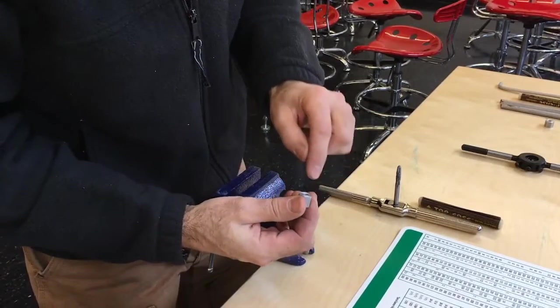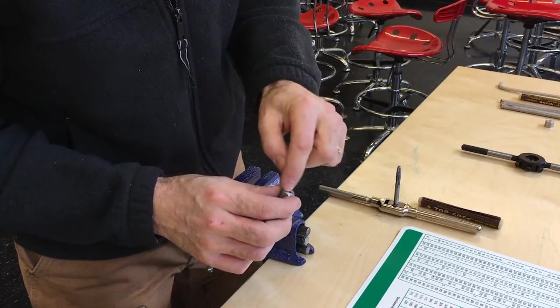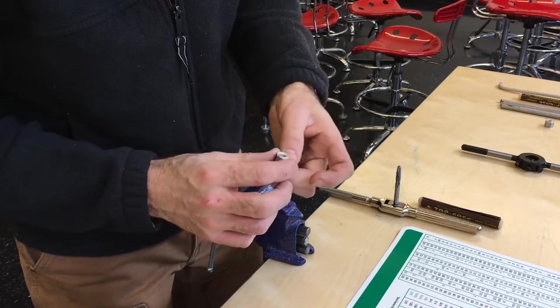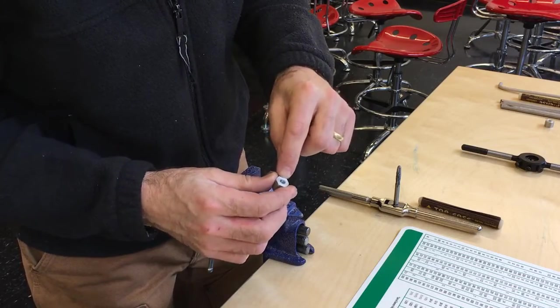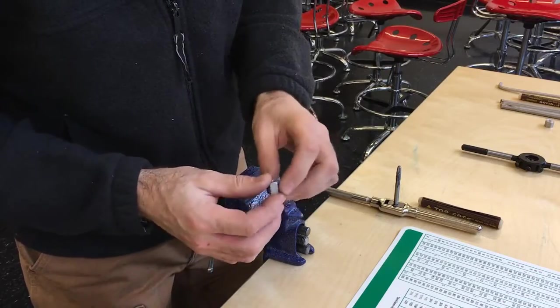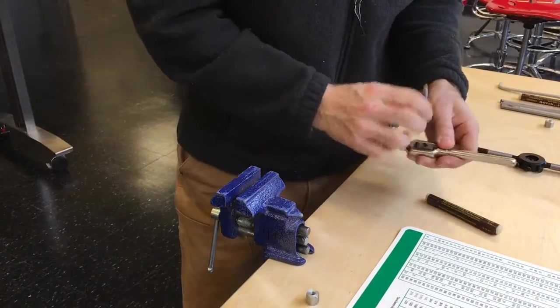Now one thing I might want to do later is go in with a countersink and just relieve those holes a bit, because right now I can feel there's a little bit of a burr on there on both sides where the metal is sticking up above that edge because it's been cut and it's been bent out. But that's where we start. Now we'll do the other part.